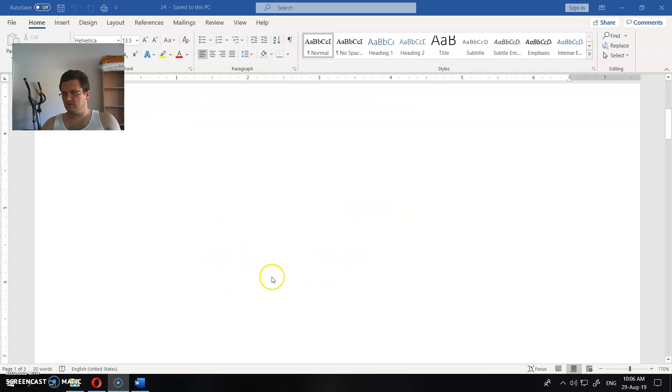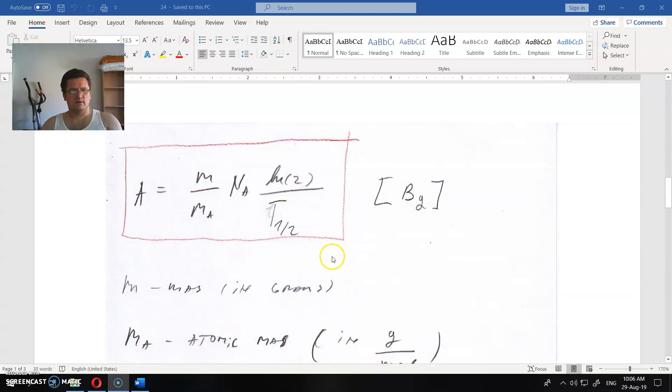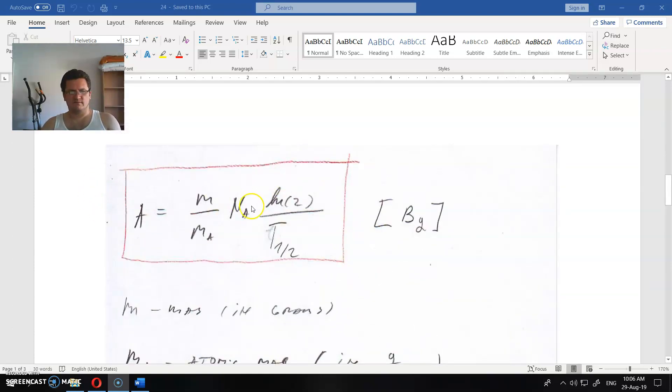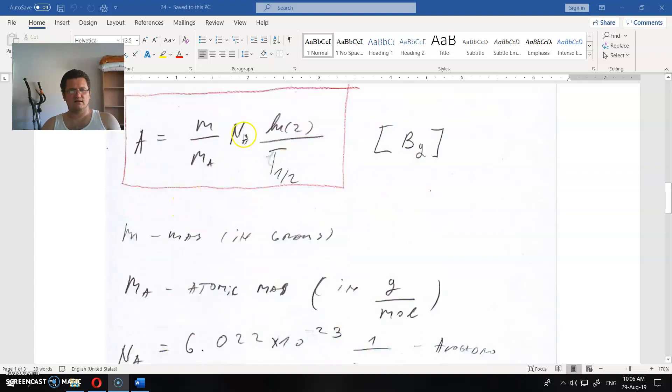So activity is needed here. This is the equation for activity. This is the mass of material in grams. This is atomic mass. This is Avogadro's number or Avogadro's constant. This is natural logarithm of number 2.